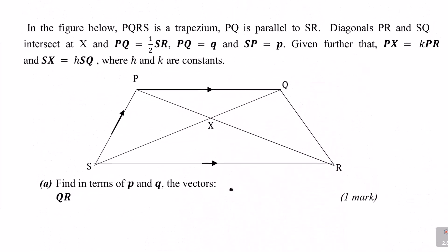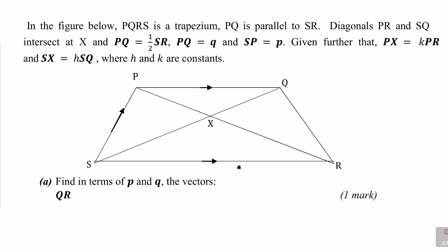Let's go to the first part. In this trapezium, we have diagonals PR and SQ intersecting at X. PQ equals half SR, and we are given that PQ equals vector q, and SP equals vector p.